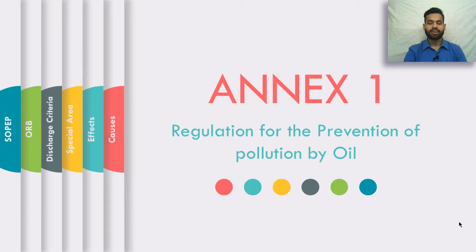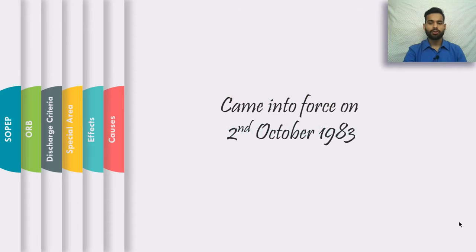Annex 1 stands for regulation for the prevention of pollution by oil. Annex 1 came into force on 2nd October 1983. You don't need to remember the specific date, but just remember the year when it came into force.